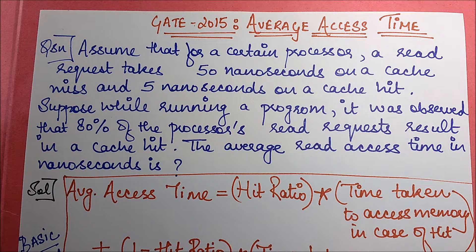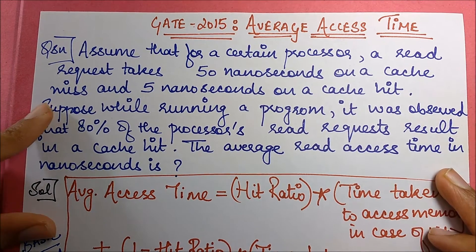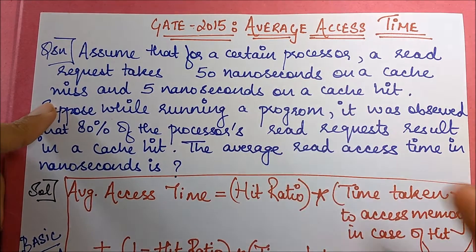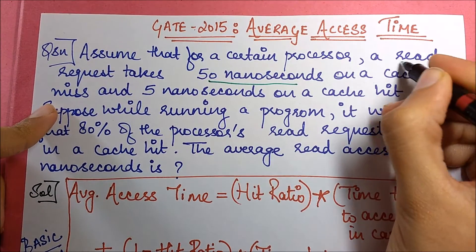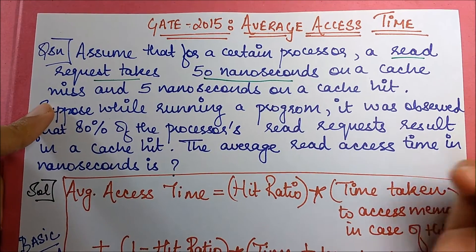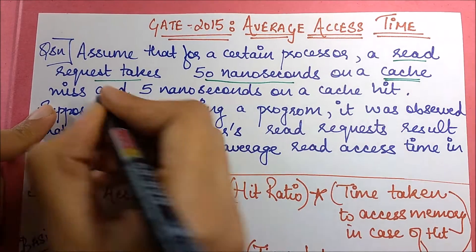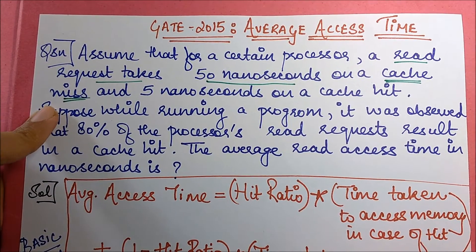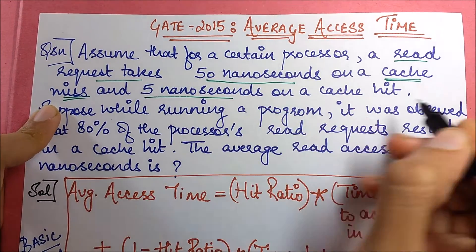The question is: assume that for a certain processor, a read request takes 50 nanoseconds when it is a cache miss. This is important. Next, it takes 5 nanoseconds when it is a cache hit. So two cases and two timings.